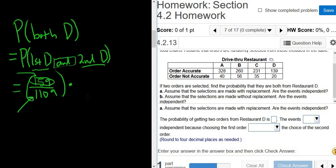And the second one also has to come from restaurant D. However, they're made with replacement. That means we take an order, we look at it, and then we put it back. So we still have 159 ways to pick an order from restaurant D and 1109 ways to pick an order. So it doesn't change because we put the order back.